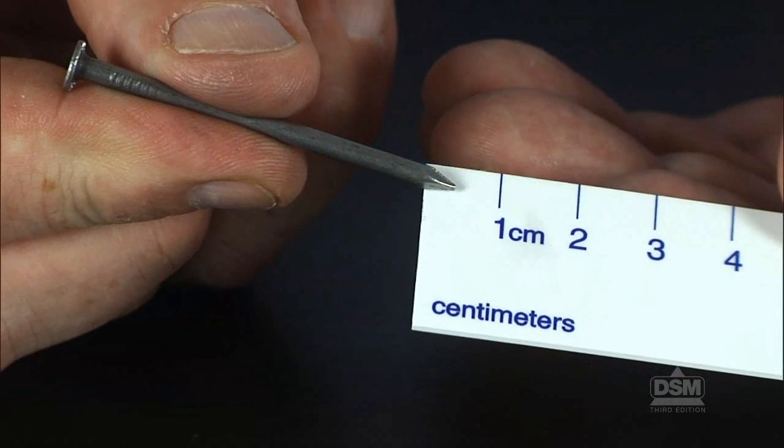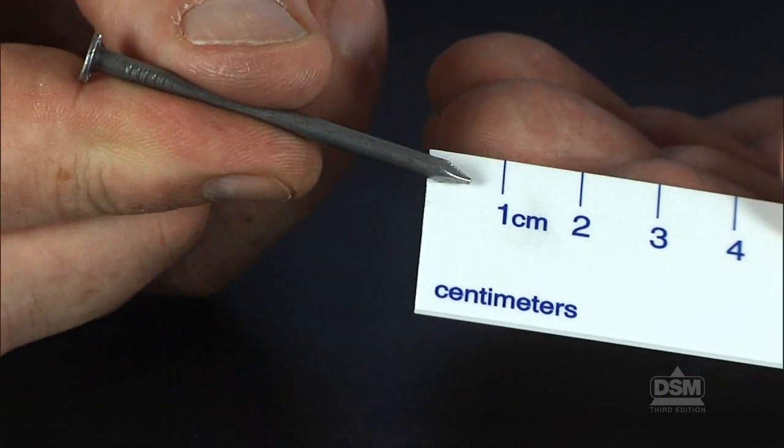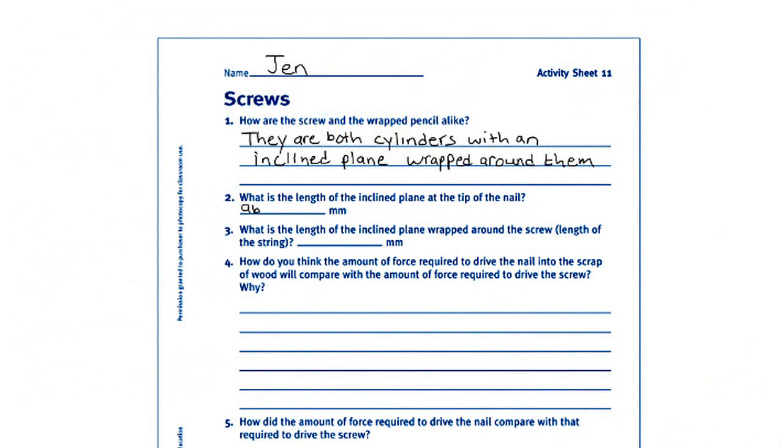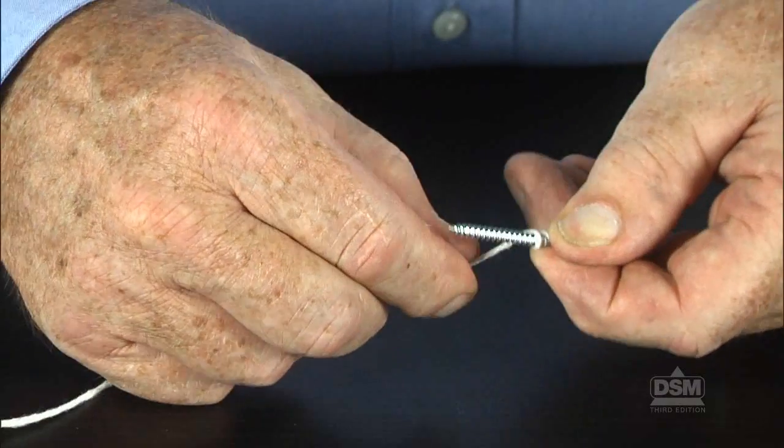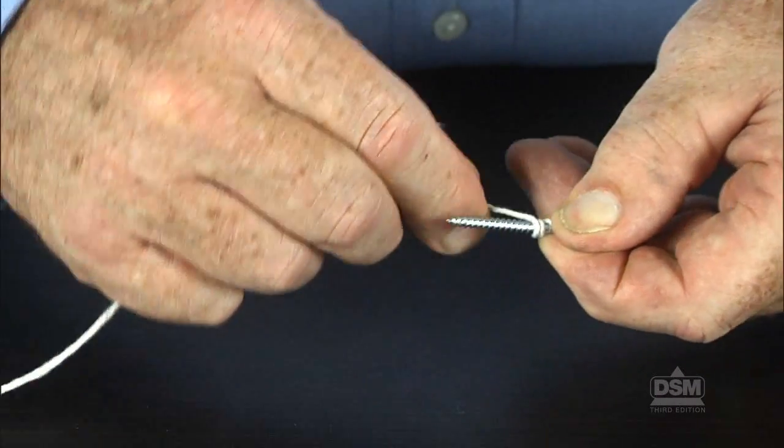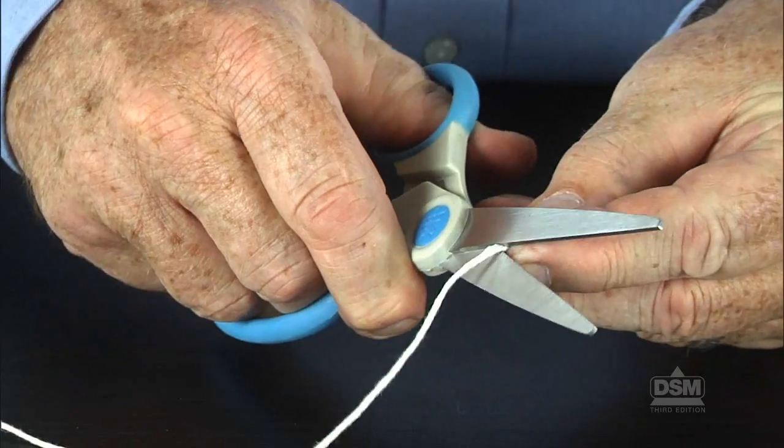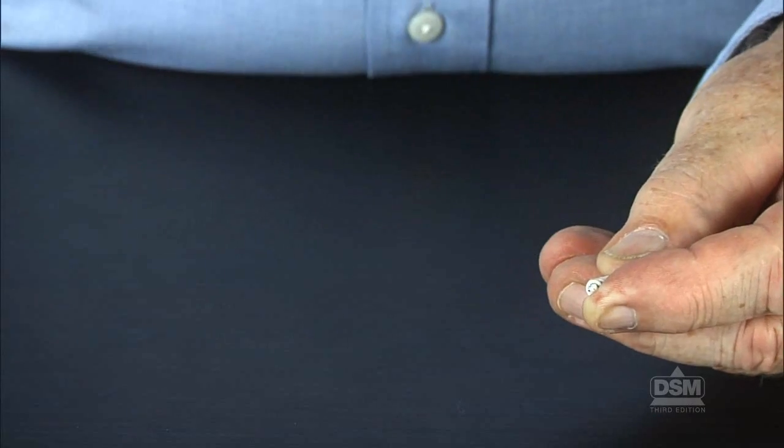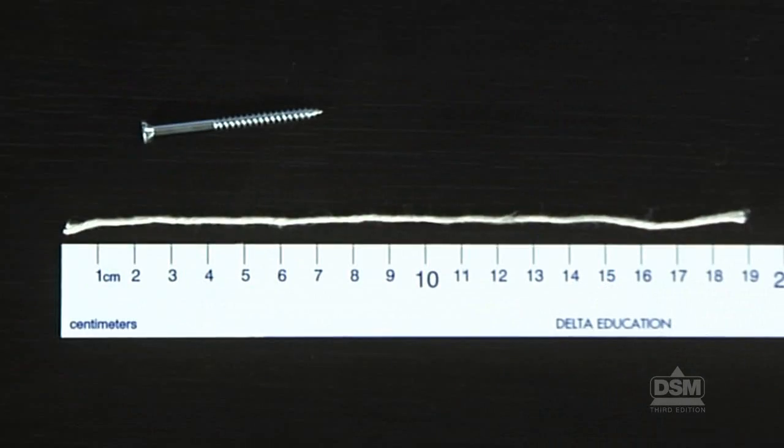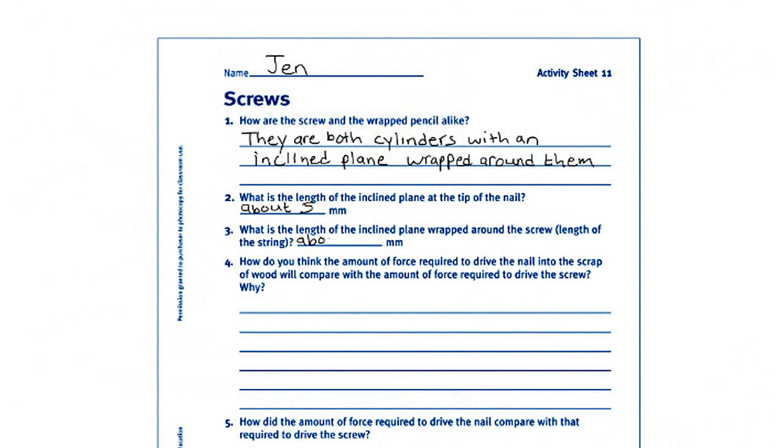Next, ask the teams to use their rulers to measure the length of the inclined plane that makes up the pointed tip of the nail, and instruct students to record this measurement on their activity sheets. Then tell students to wrap a piece of string around a screw, following the screw's threads, and cut it when the spiral is completed. Have them remove the string from the screw and measure its length. Tell the class that this string represents the length of the inclined plane on the screw. Finally, have students record this information on their activity sheets.